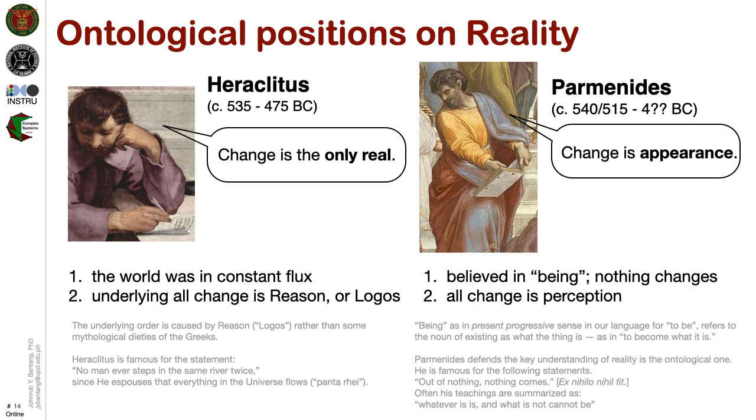Heraclitus is known for the statement, no man ever steps in the same river twice. He believes that everything in the universe flows, or panta rhei. The other side of the debate is represented by Parmenides. For Parmenides, change is only an appearance and there is only constant in the universe. Parmenides defends the key understanding of reality as an ontological one. He is famous for saying, out of nothing, nothing comes. His teachings are often summarized as: whatever is, is, and what is not, cannot be.